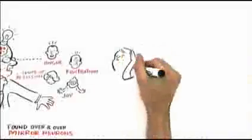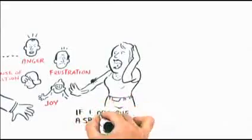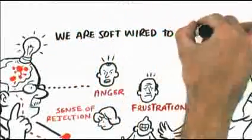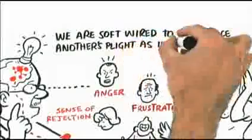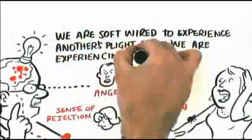This isn't all that unusual. We know if a spider goes up someone's arm and I'm observing it going up your arm, I'm going to get a creepy feeling. We take this for granted, but we are actually softwired to experience another's plight as if we are experiencing it ourself.